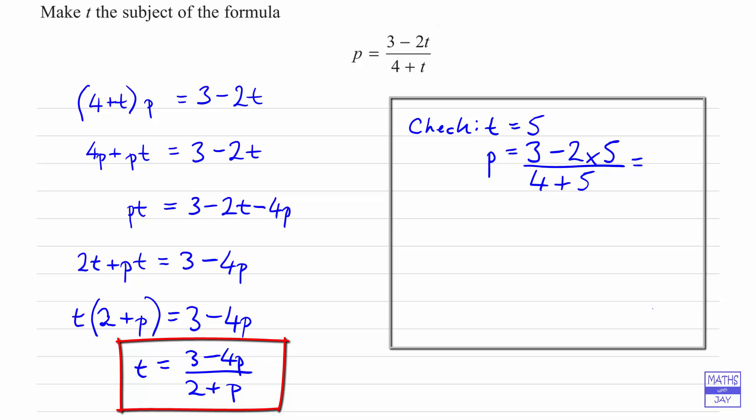So 3 minus 2 times 5 is 3 minus 10, so that's going to be minus 7, and 4 plus 5 is 9. So all I've done there is said that when t is equal to 5, then p would be minus 7 ninths.